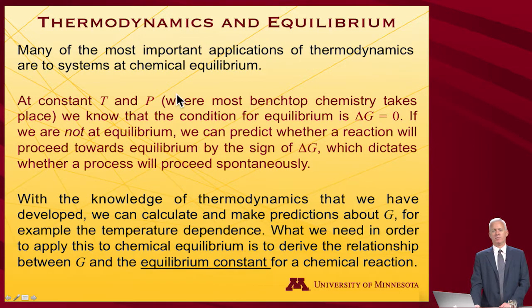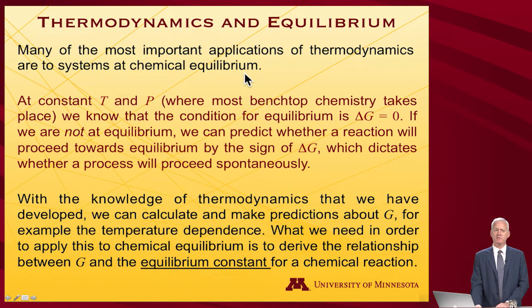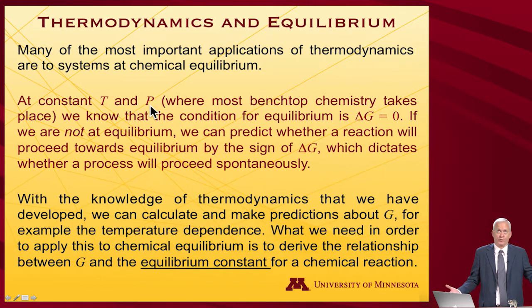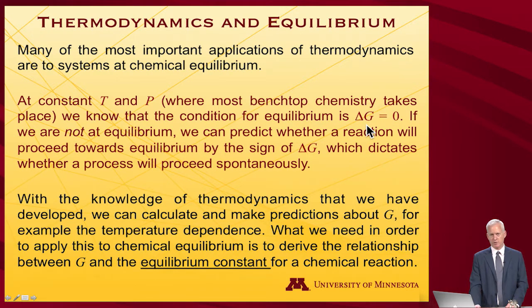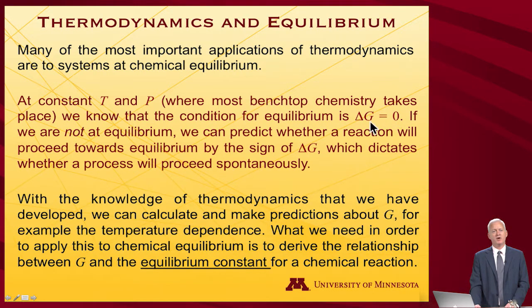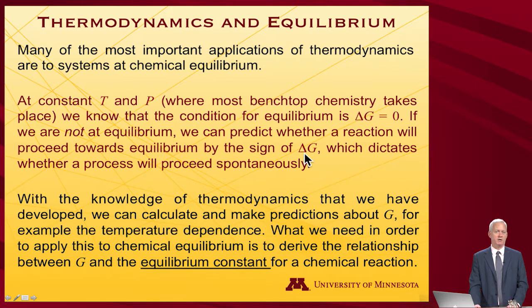Many of the most important applications of thermodynamics are to systems at chemical equilibrium. Usually, if it's benchtop chemistry, what we're working with is constant temperature and pressure — an open flask in a room that is hopefully holding its temperature. We know that the condition for equilibrium under those circumstances is that delta G equals zero for some potential process. If you're not at equilibrium, we can take a process that wants to occur and decide what direction it goes based on looking at the sign of delta G.